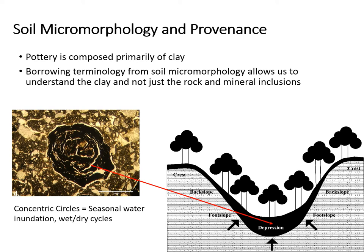Different features in the soil can provide information on how and where the soil was formed, which can tell the analyst where potters may have been collecting clay on the landscape. The image on the left shows a soil feature with concentric circles, which form when a soil is seasonally inundated with water through distinctive wet and dry cycles. This pottery was produced using clay from a location in the foothills of a group of mountains composed only of limestone. The depression between the foothills and the mountains is seasonally inundated with water, so this is likely where potters were collecting clay. This soil micromorphology provided more specific information on provenance than could have been ascertained from the rock and mineral composition alone.